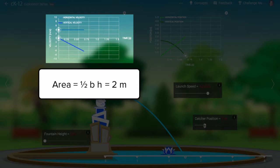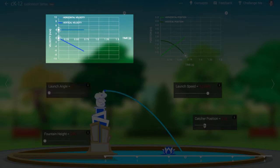Now that we have the time, we can figure out the area of the horizontal velocity graph. Now we have the catcher position.